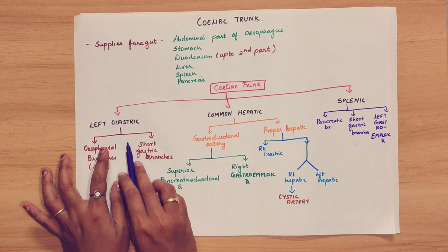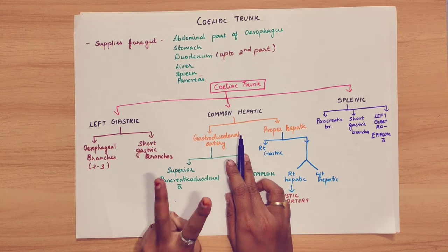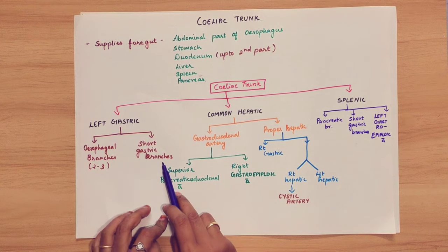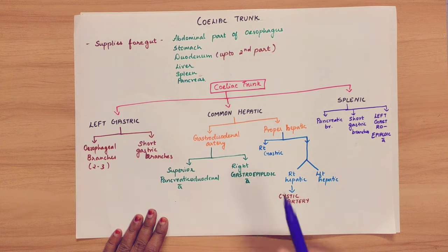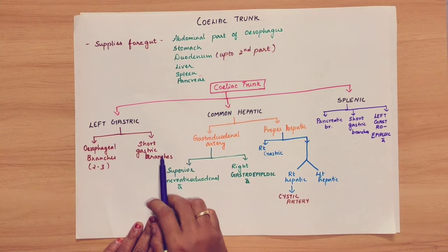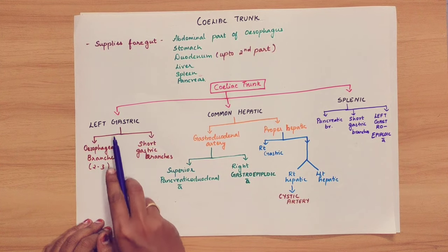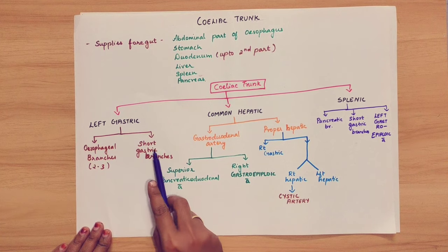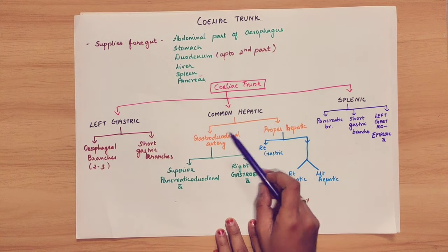Let's look at the left gastric artery. The left gastric artery has 2 branches: one is the esophageal branch and one is the short gastric branches. The esophageal branches and short gastric branches — there are 2 to 3 short gastric branches.